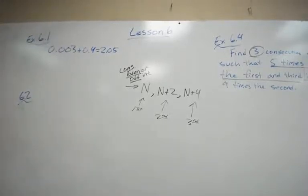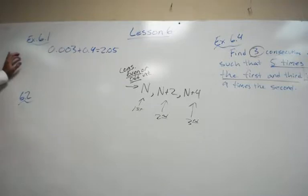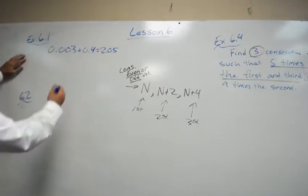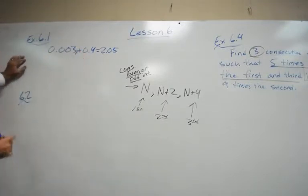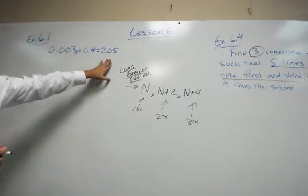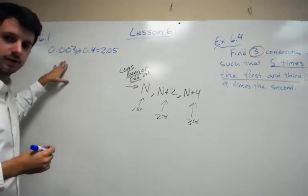Let's continue with lesson six, starting with equations with decimal numbers. For some of these we're just going to solve — there's not much teaching. Example 6.1 says: solve this equation. You could just subtract 0.4 from 2.05 and then solve, but there's what I think is an easier way.